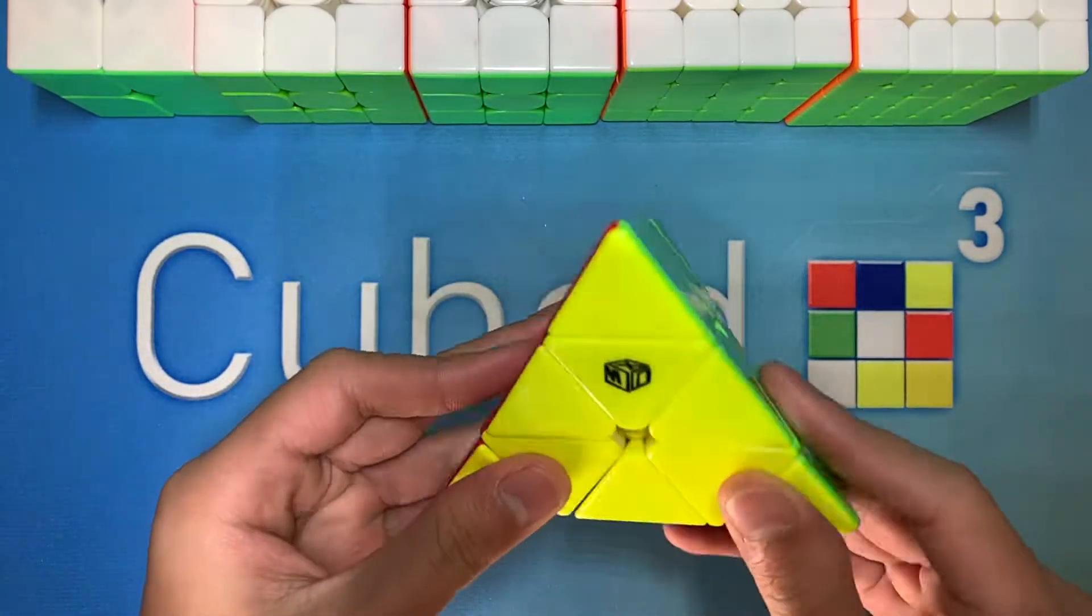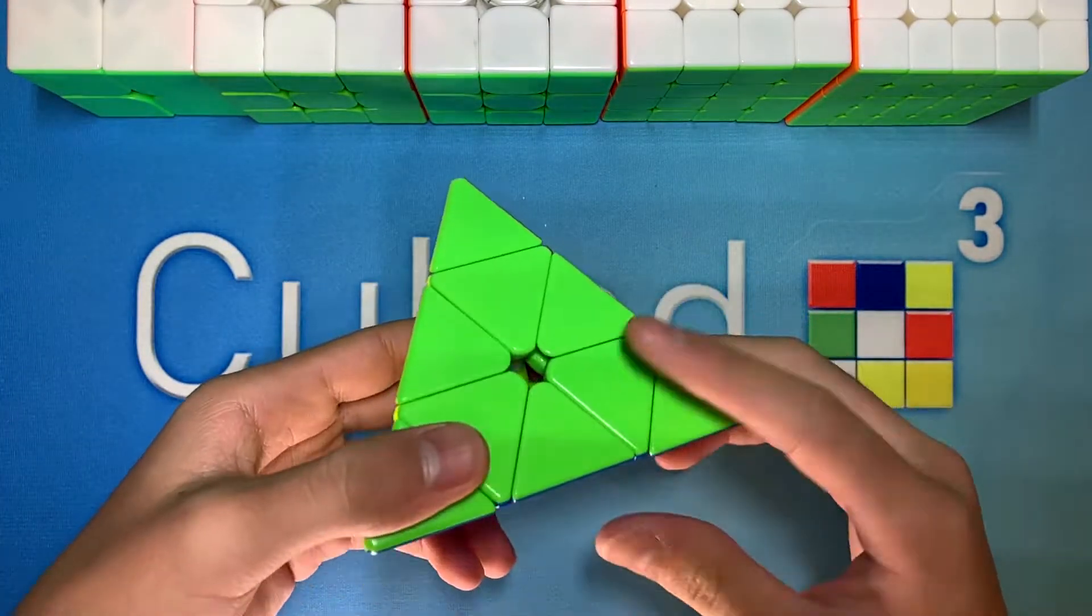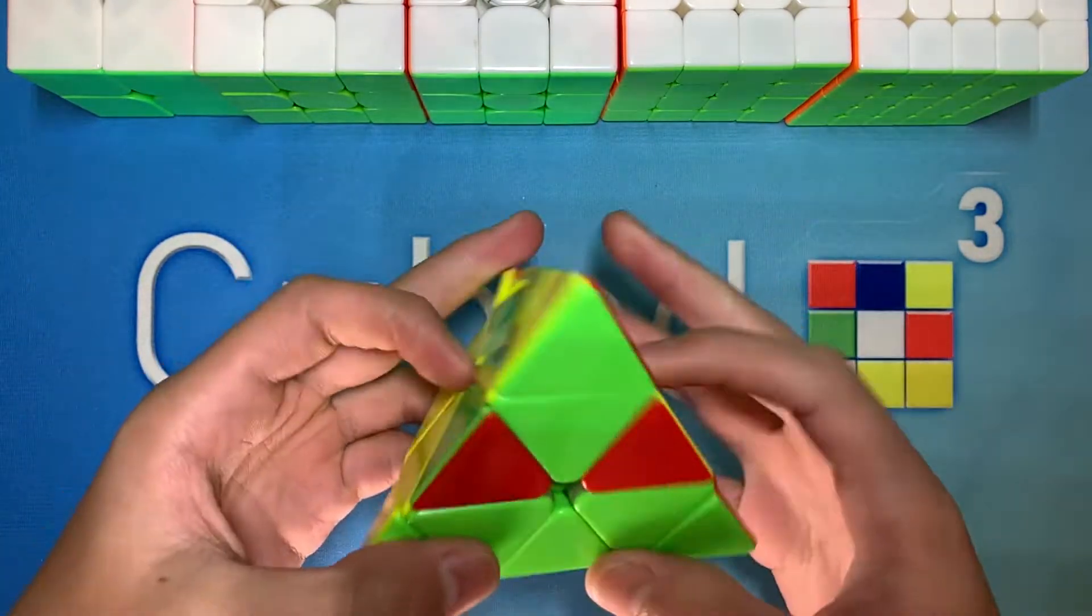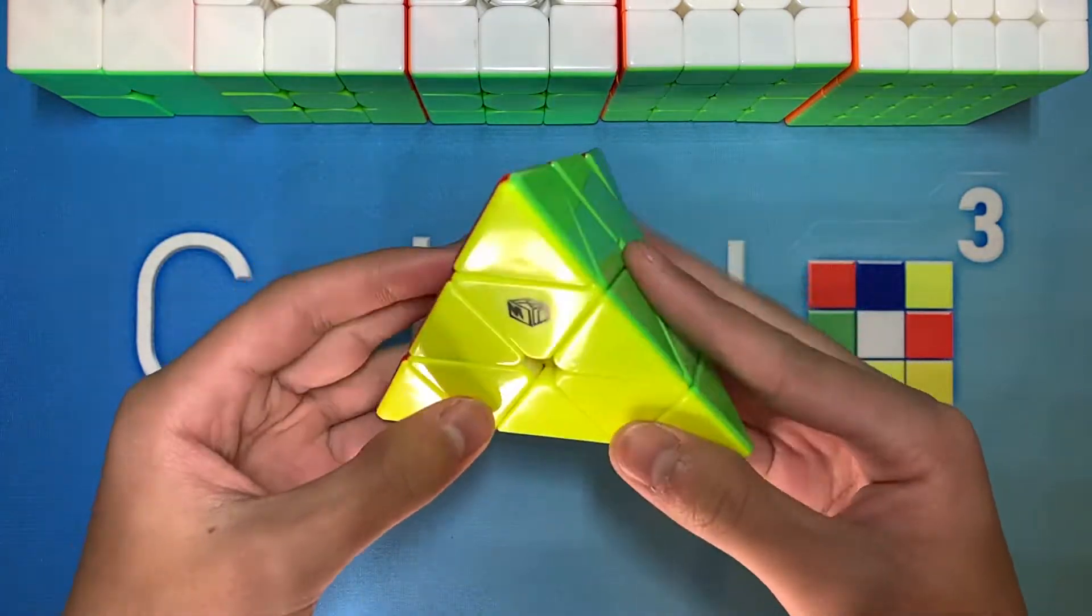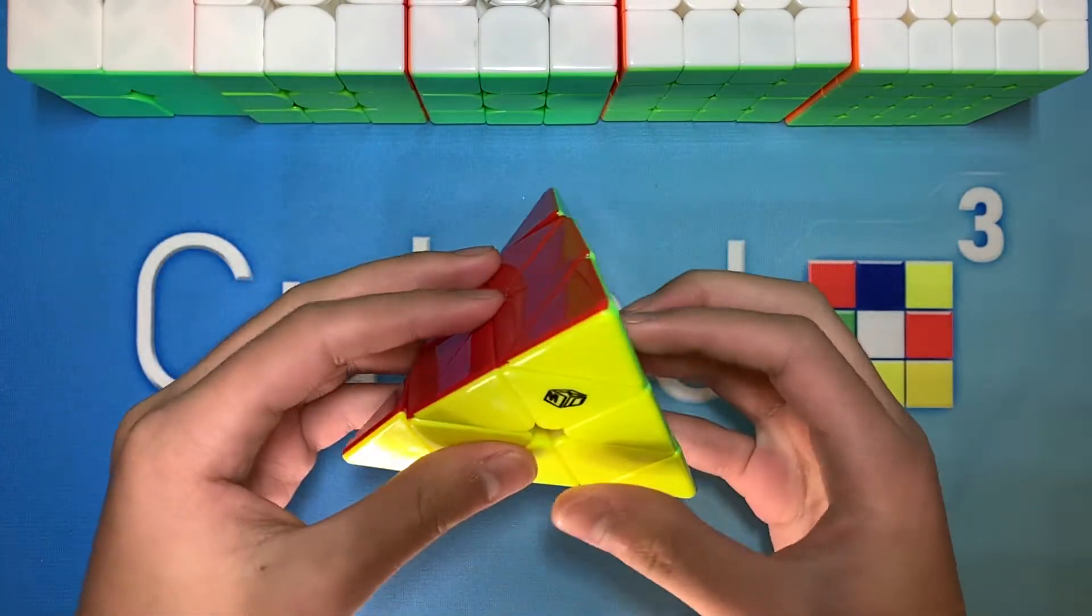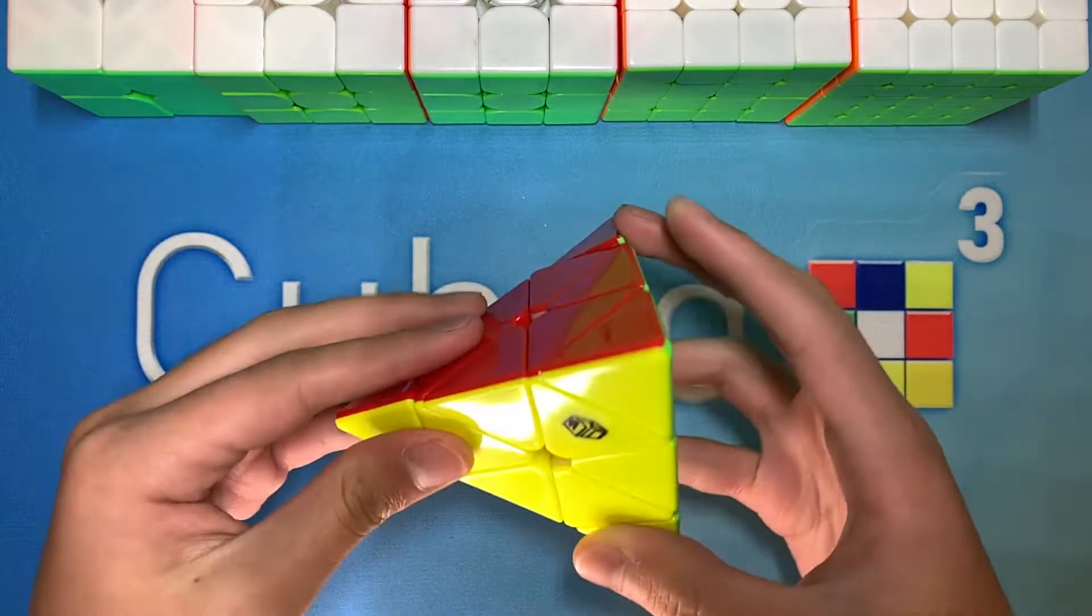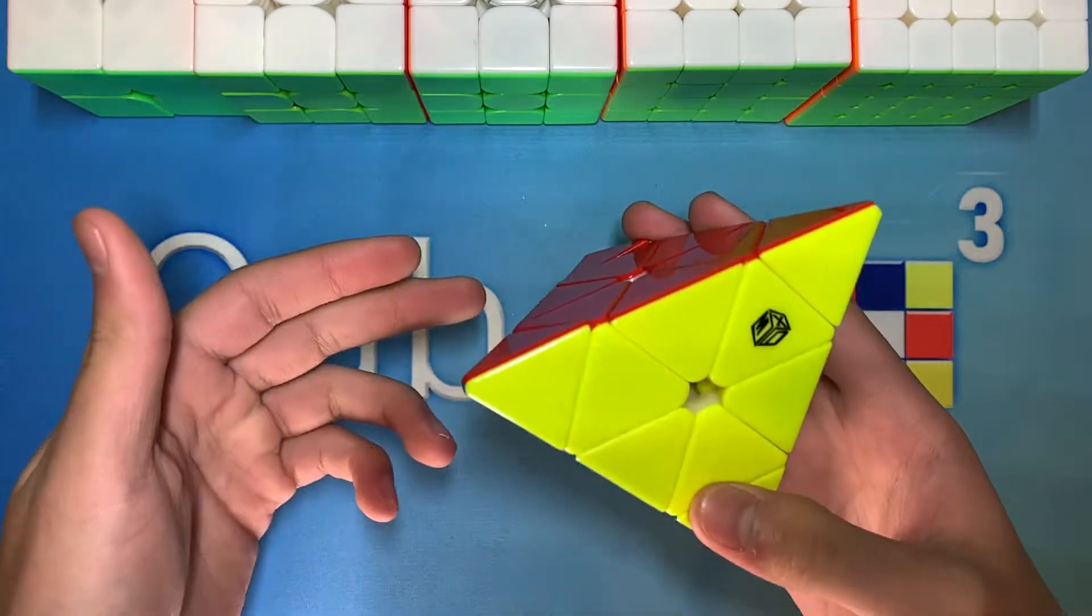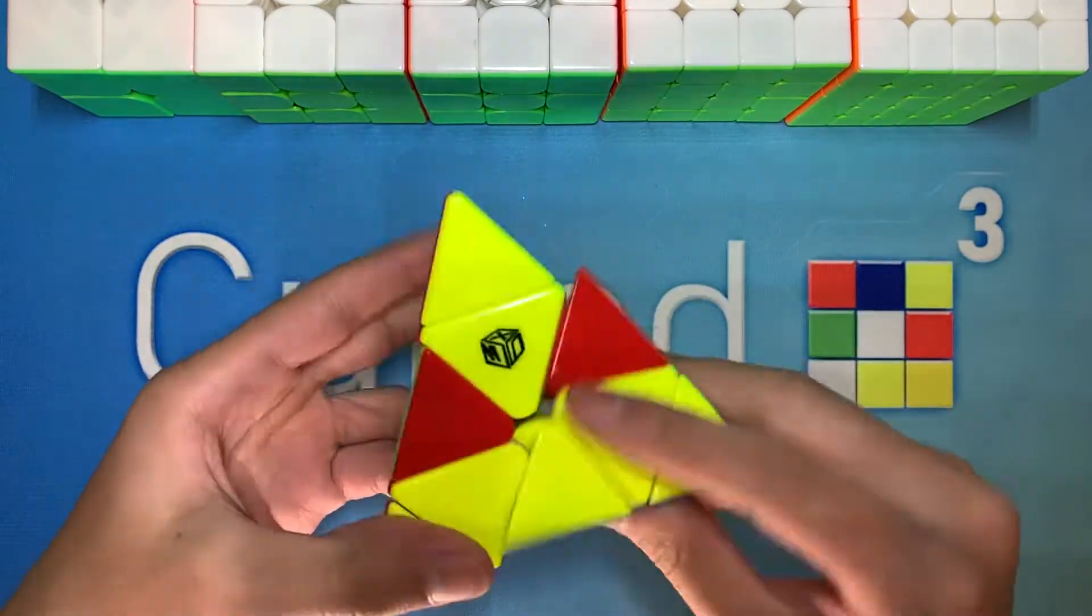For my last event, Pyraminx, I'll be using the X-Man Bell Pyraminx. If you've watched some of my videos, you probably know that Pyraminx is an event that I don't really practice that much. Unfortunately, at Nationals, I kind of messed up during this event and wasn't able to get a sub 10 average. But at home, I easily average sub 9 or sub 8, so I'll just be going for a sub 10 average again.